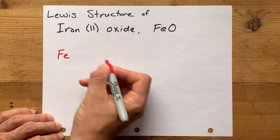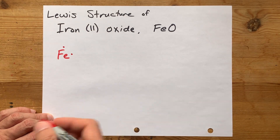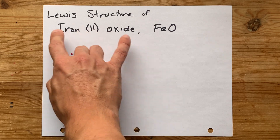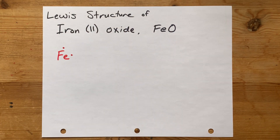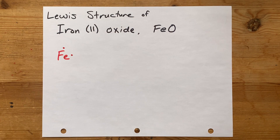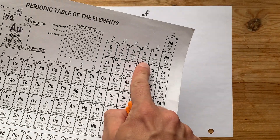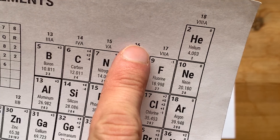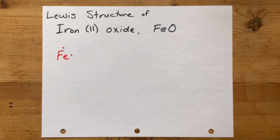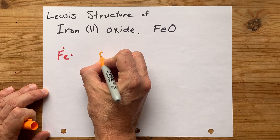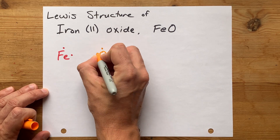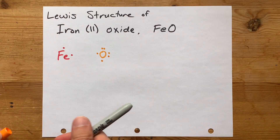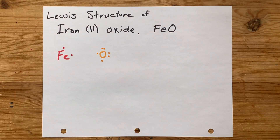Iron, Fe, in this case will have two valence electrons, because that's the charge on it in the formula itself. Now, oxide is oxygen — that's group 16, also known as six valence electrons in its outer shell. So I'm going to draw the O with one, two, three, four, five, six valence electrons. Note that I spread them out before I doubled them up.